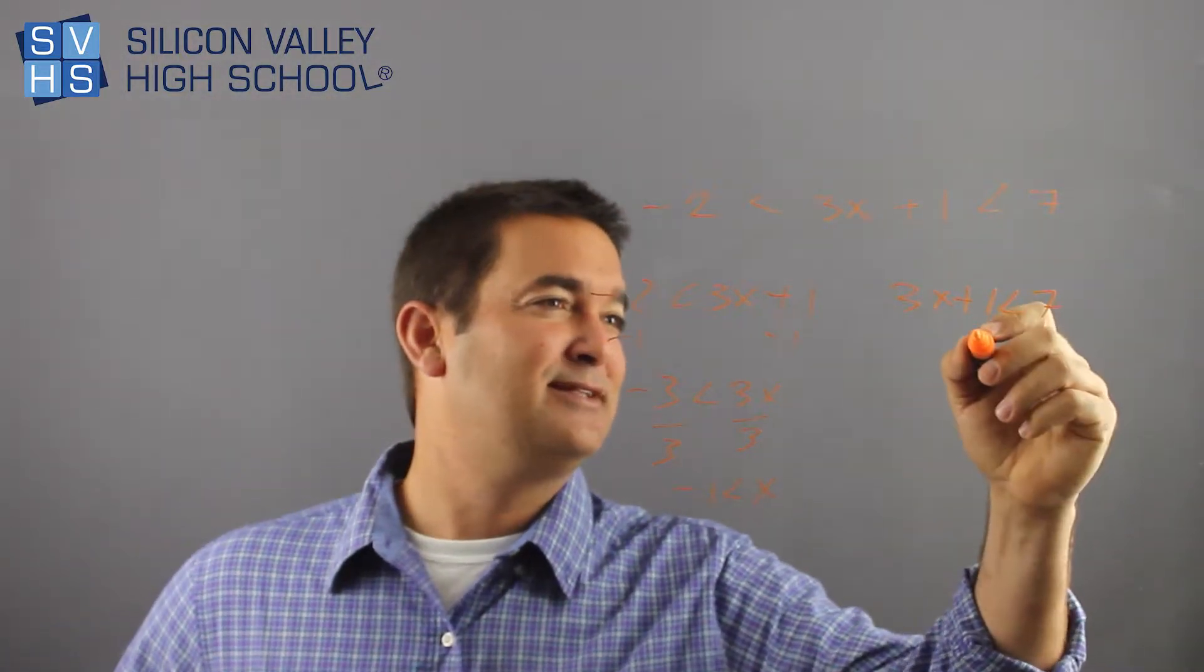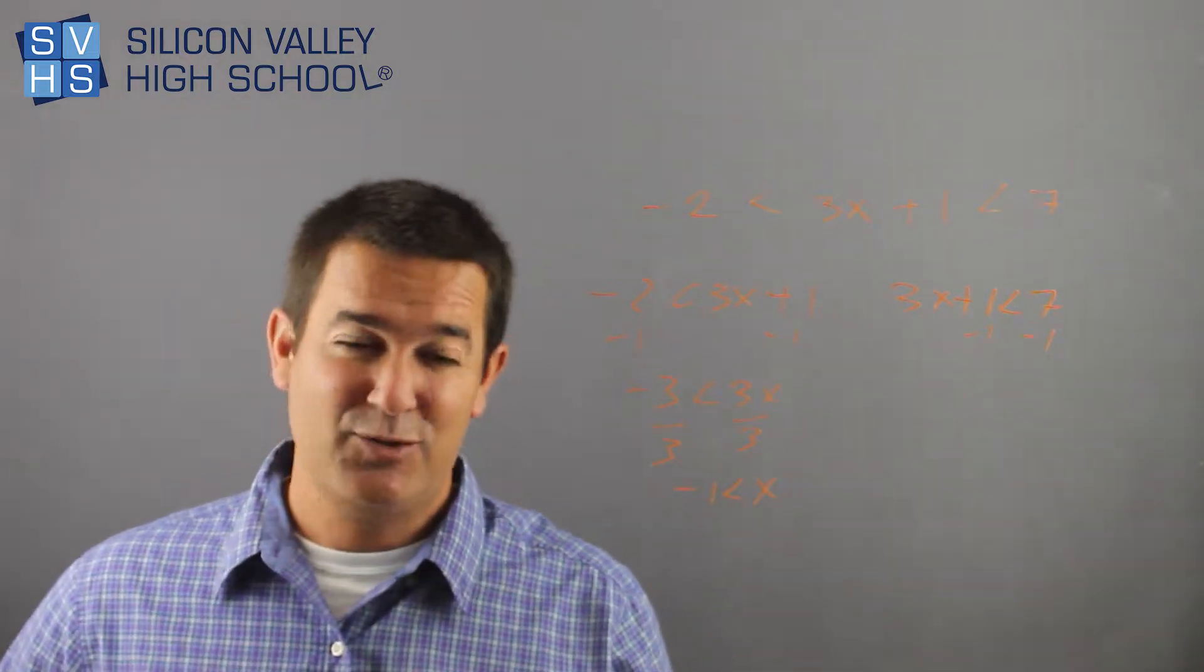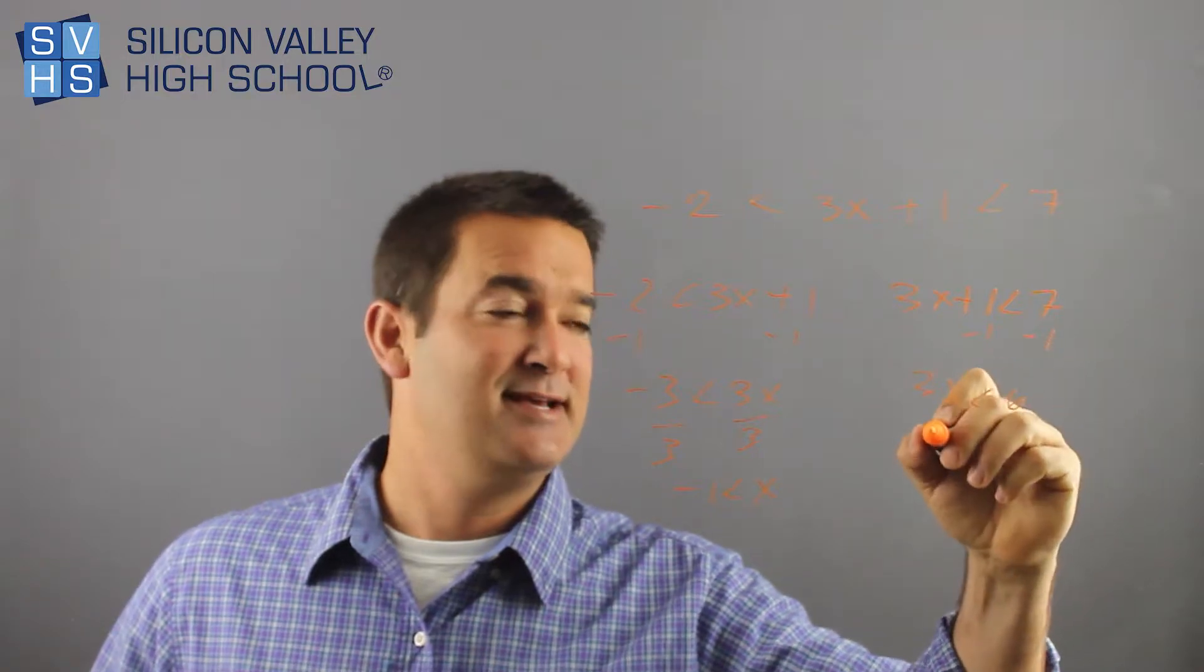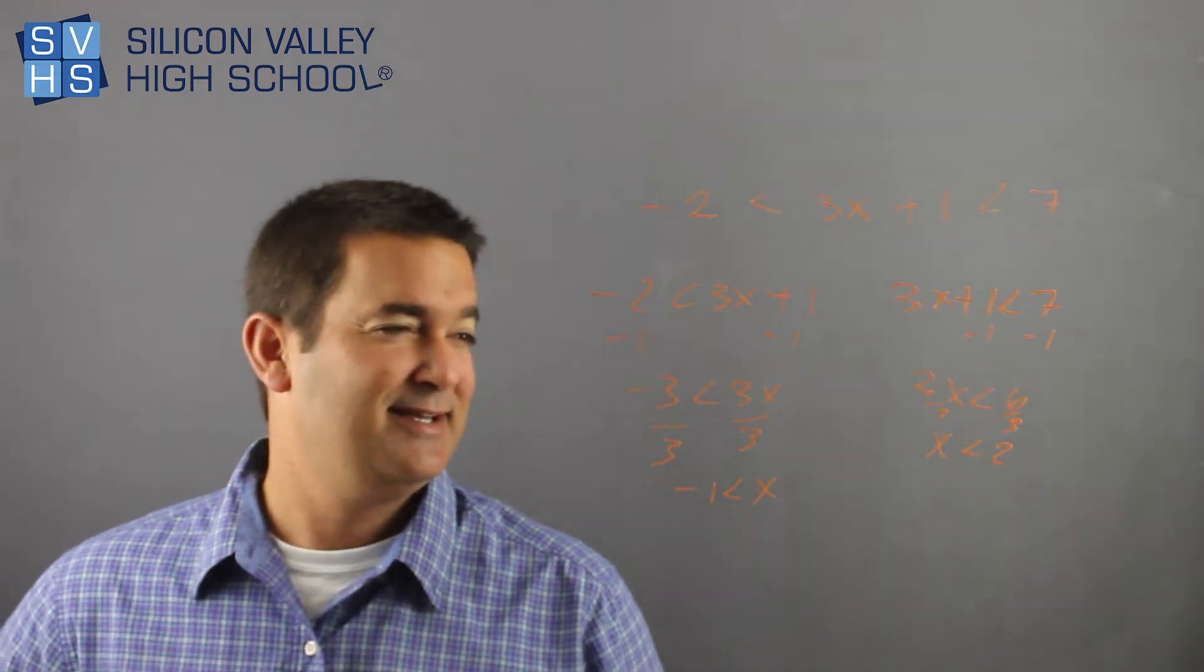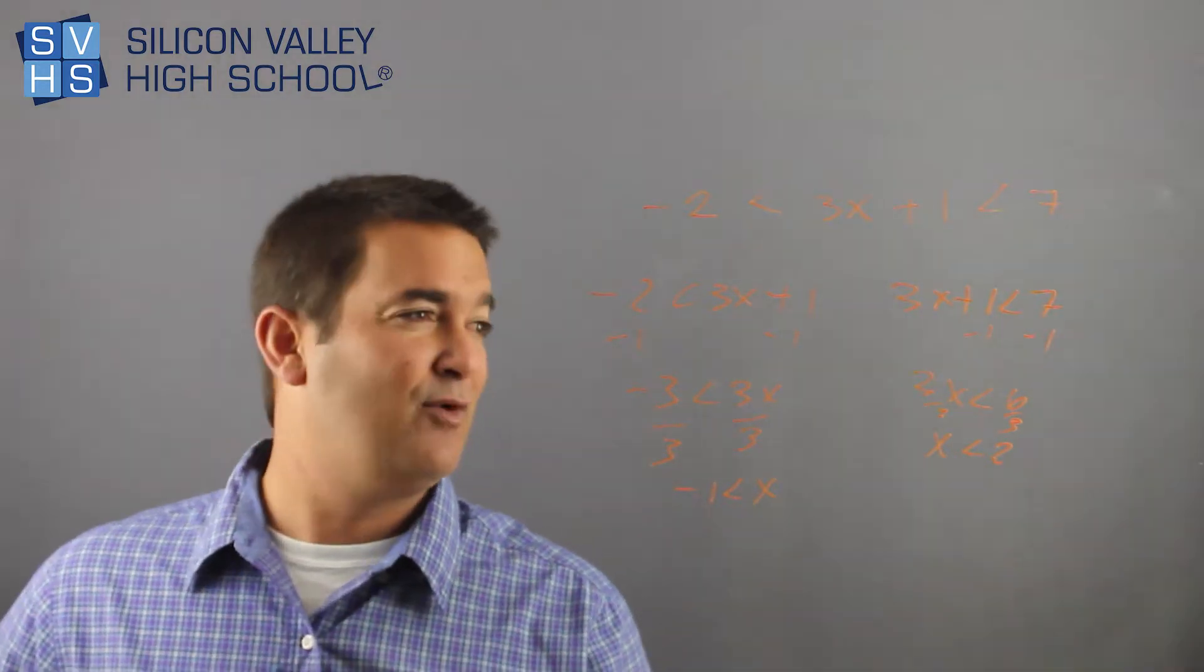Over here, same deal, let's get this one out of here. You're going to subtract it across to the other side of the inequality sign, so then you're going to have 3x is less than six. Divide by three, x is less than two. So what's cool about this is, if x is less than two and greater than negative one...